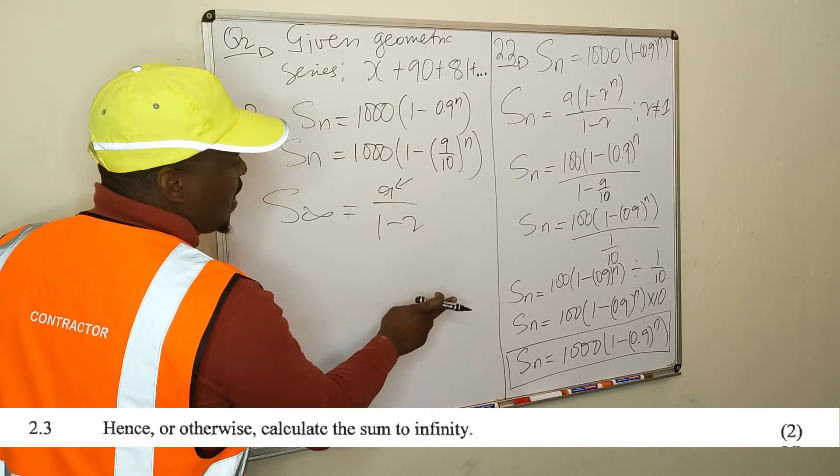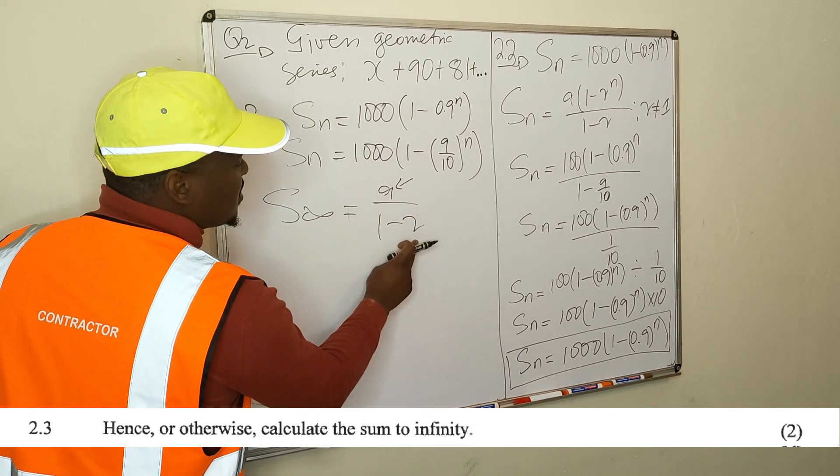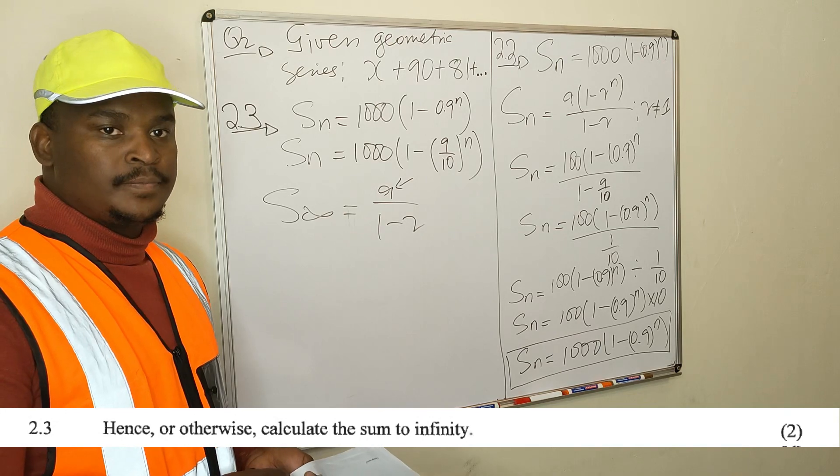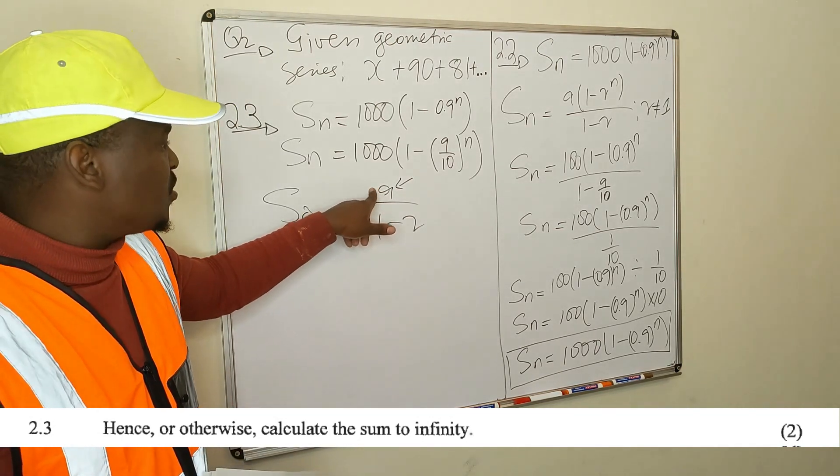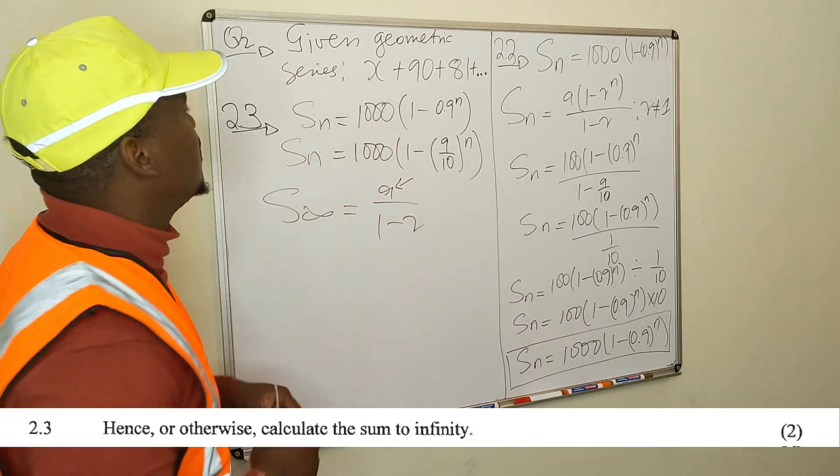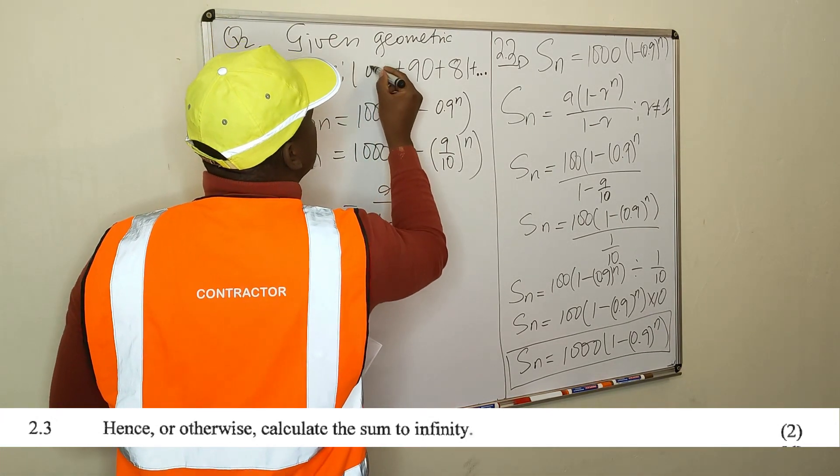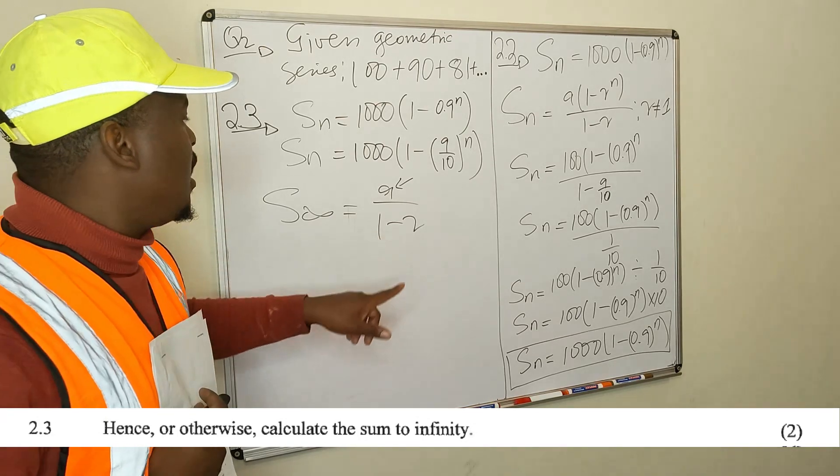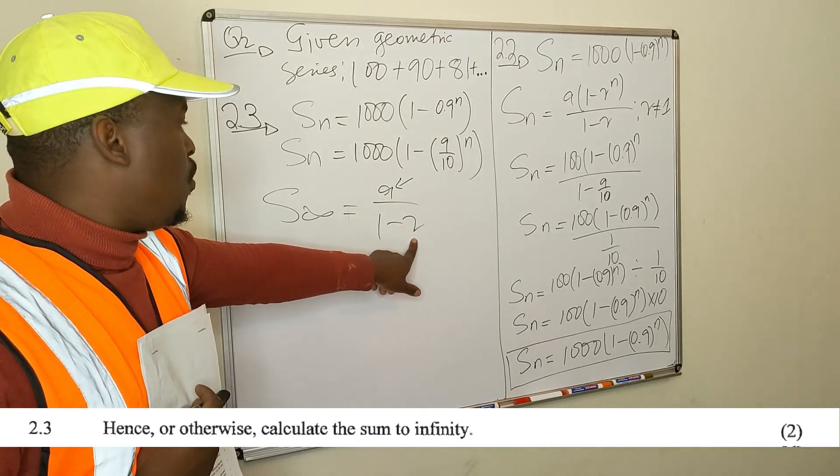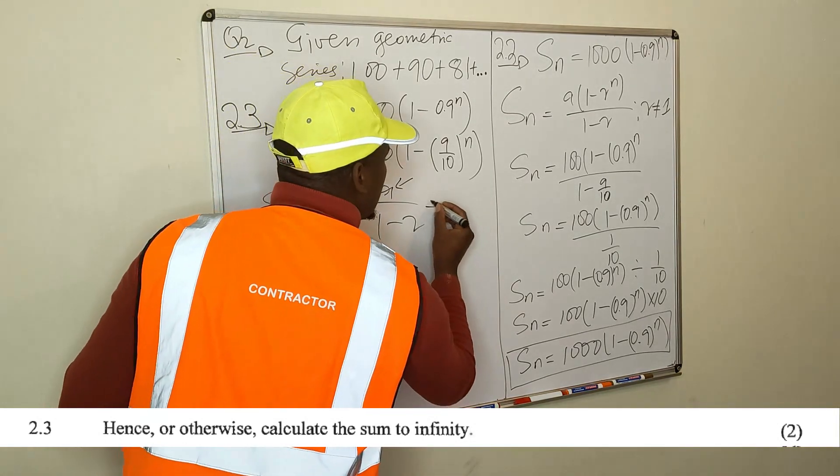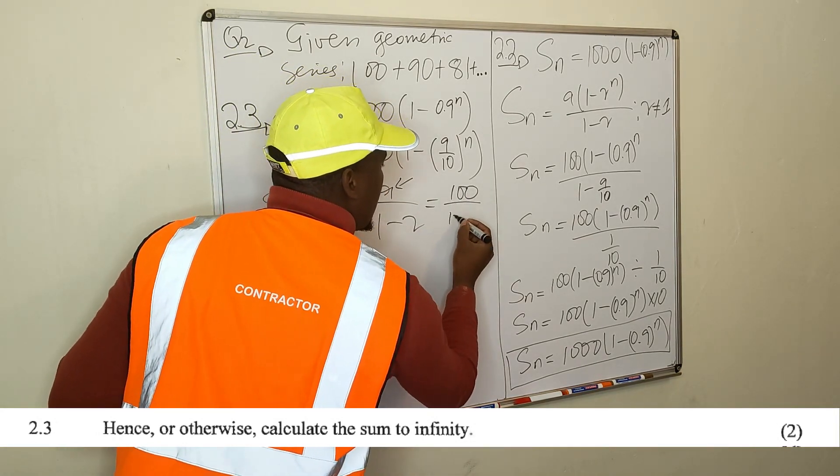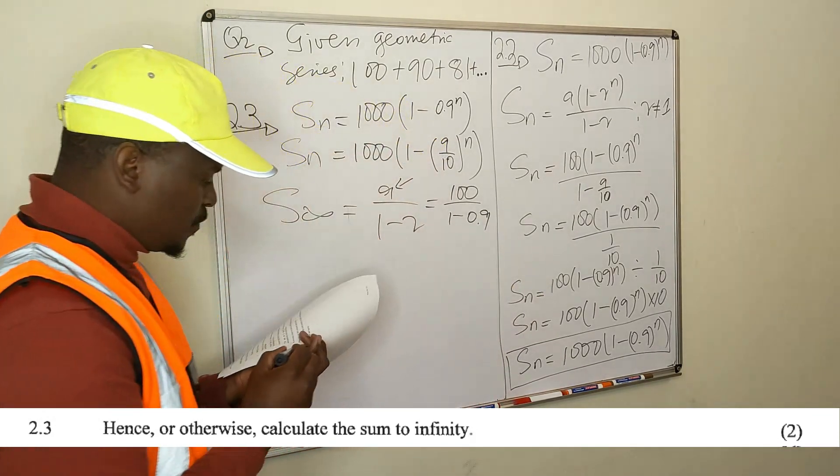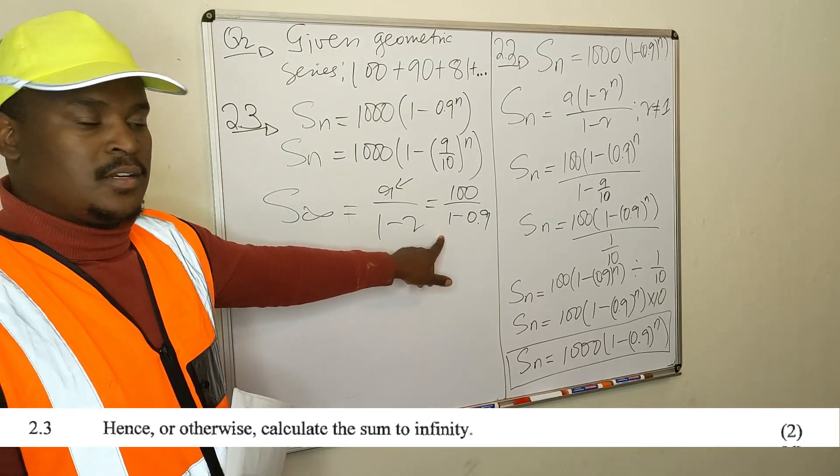Sum to infinity is equal to A over 1 minus r. Your A is x which you found is 100. And this is 1 over 9. You can do that. I think that is one way of doing it. So you substitute your 100, then your x which is your first term, because you found that x was equal to 100. So in that position of A you substitute the 100 and substitute 9 over 10. Then you find your answer. You get the sum to infinity. Easy.